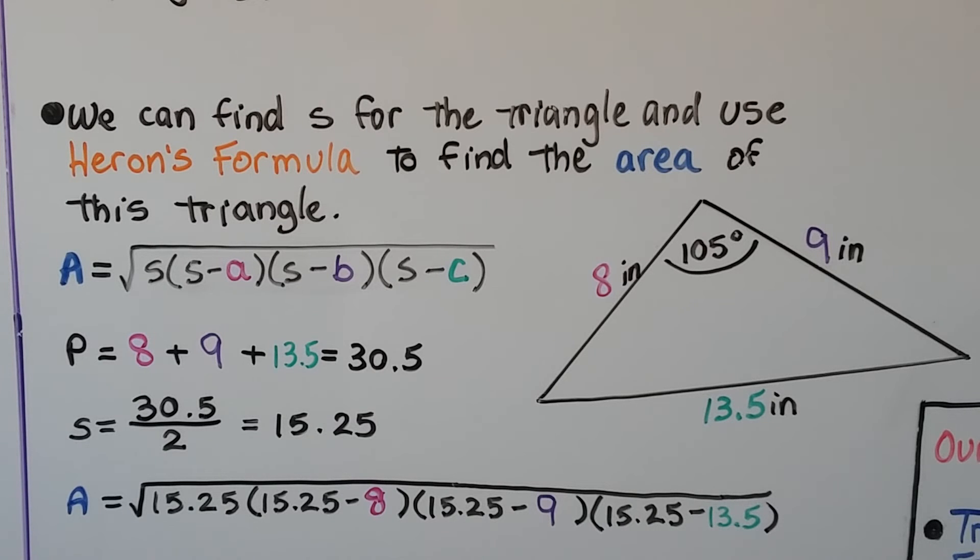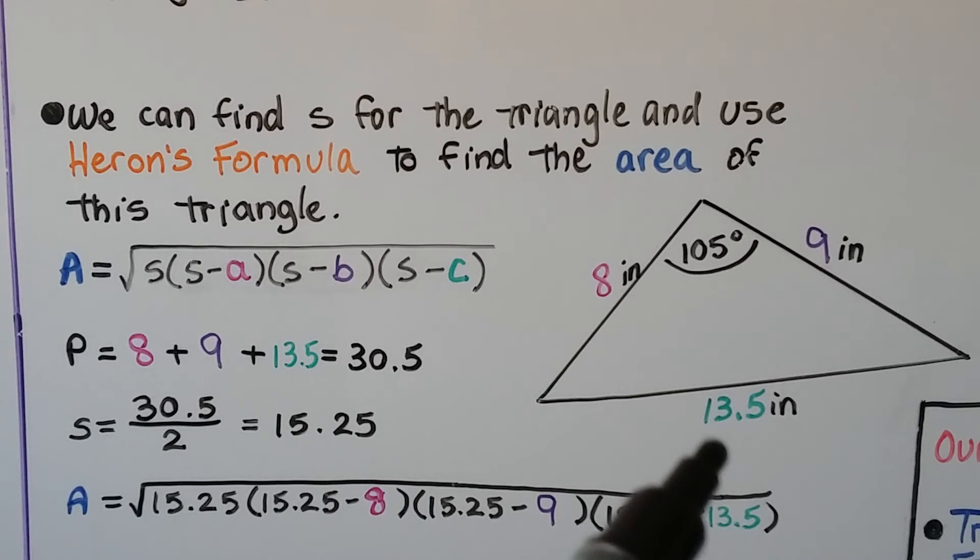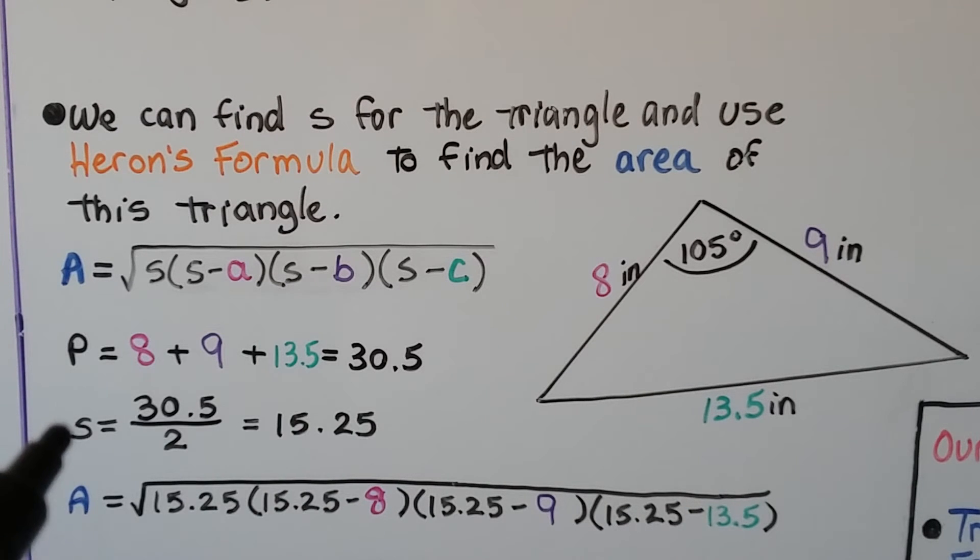So now what we do is we find out what s is for the triangle. And remember, it's half the perimeter. So we're going to add the 8 plus 9 plus 13.5 and get 30.5. We need half of that for s, which is 15.25.